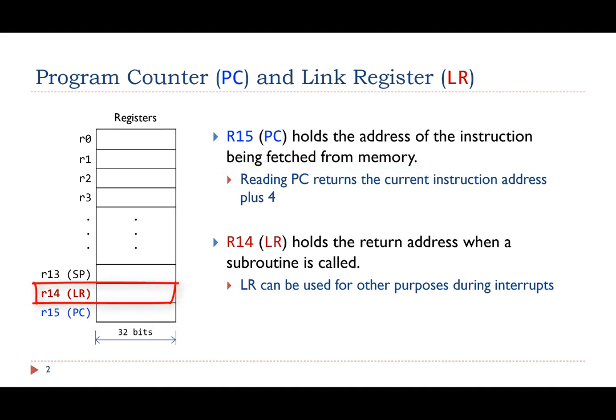Register R14 is the link register. It holds the return address when a subroutine is called. It stores the memory address of the instruction that should be executed immediately after a subroutine completes. The link register allows a program to continue its execution after a subroutine call is completed.